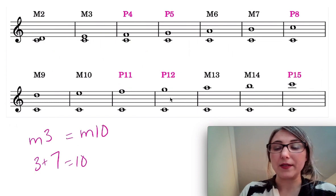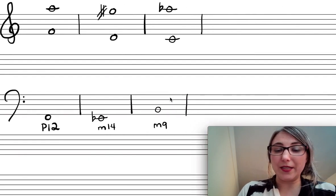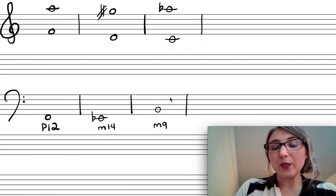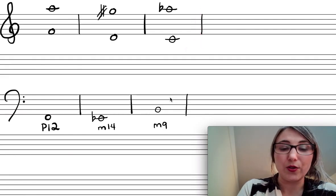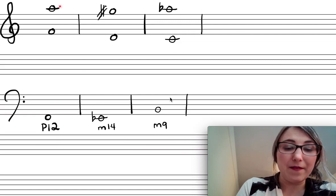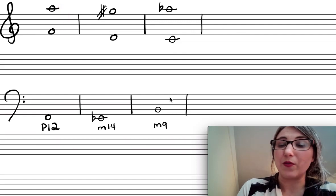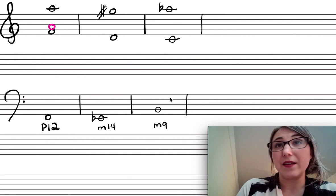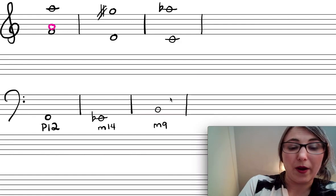Alright so let's try applying this. So I've got a couple cases up here on the top. I've got some compound intervals that we're going to practice identifying. So to do this we're going to reduce the octave out of the interval. So I'm going to take this A here and I'm just going to scoot it down an octave below and figure out what the simple version of the interval is first. So from F up to A is a major third, right?